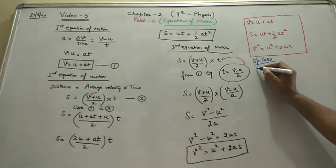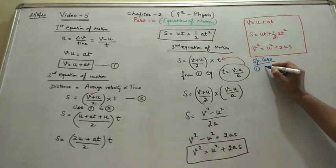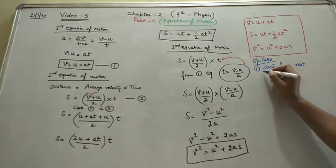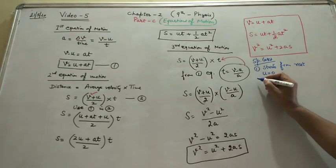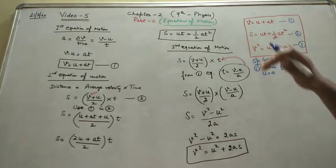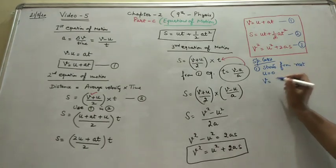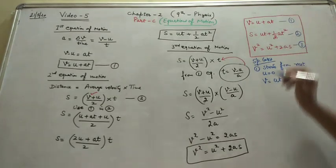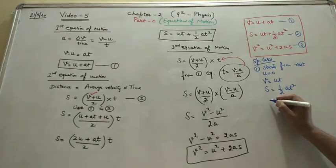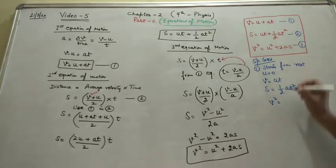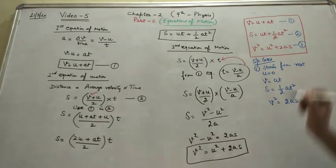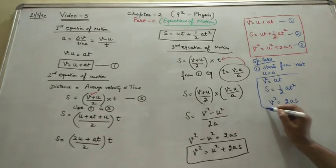After that, some special cases. First special case: when a body starts from rest, U is equal to zero. In that case, the first equation becomes V = aT, the second equation becomes s = half aT squared (since the UT term is zero), and the third equation becomes V squared = 2as.